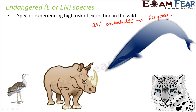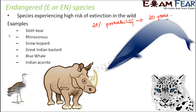Almost 22% of amphibians and reptiles are endangered, and around 19% of mammals and angiosperms are also threatened. Examples of endangered species include the sloth bear, rhinoceros, snow leopard, great Indian bustard, blue whale, and Indian aconite. Their numbers are already low, and calculations show there is a 20% probability their species might become totally extinct within 20 years.